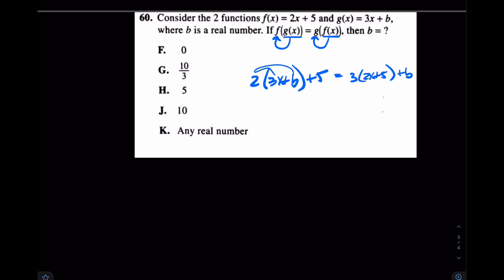When you distribute this, this is 6X plus 2B plus 5 equals 6X plus 15 plus B. Subtracting off the 6Xs, subtracting this 5, you have B equals 10. 10 is your only answer.